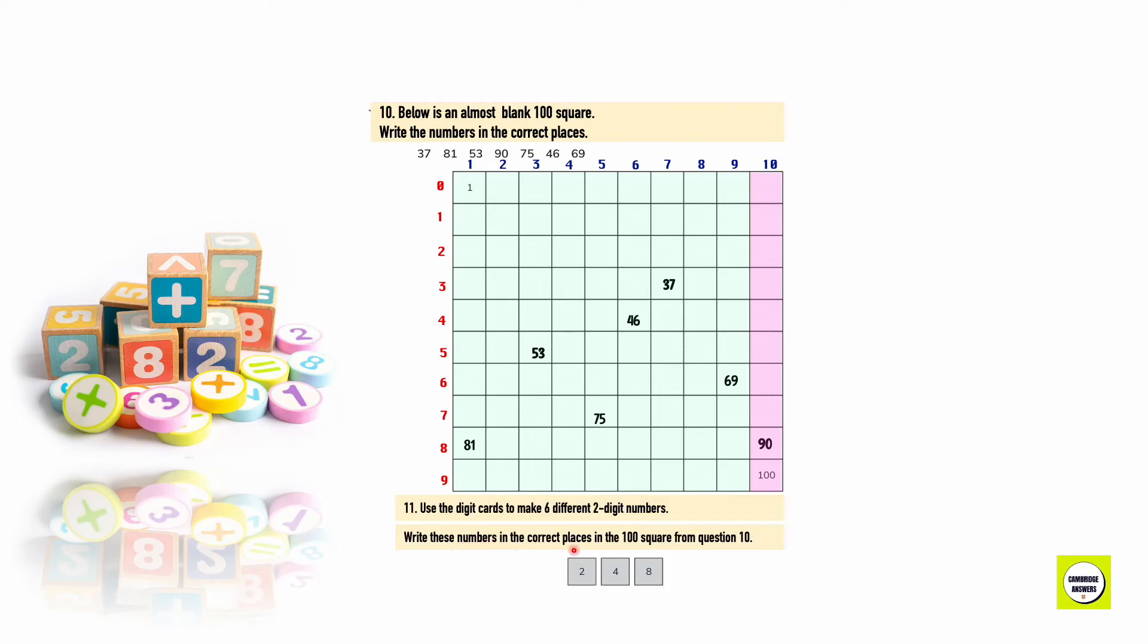Use the digit cards to make 6 different two digit numbers. Write these numbers in the correct places on the hundred square from question 10. 24, 42, 28, 82, 84, 48. 24, 42, 28, 82, 84, 48.